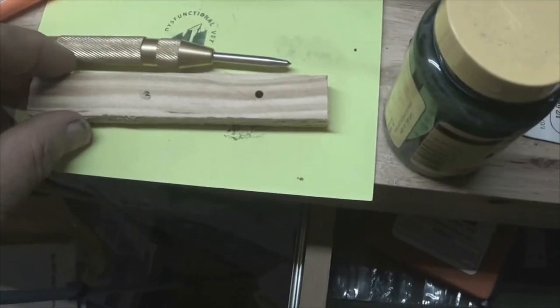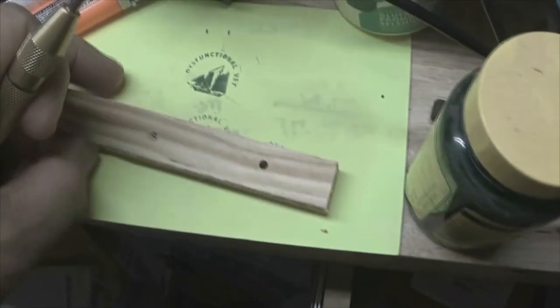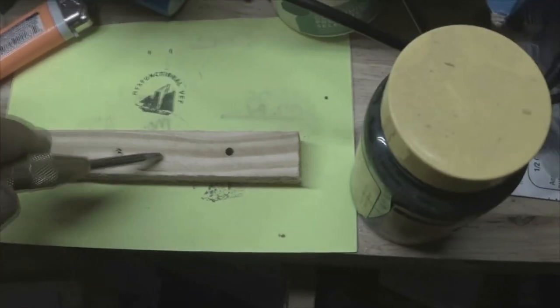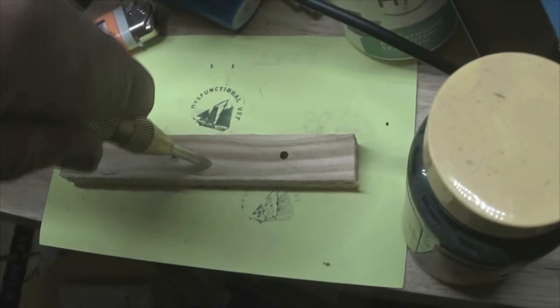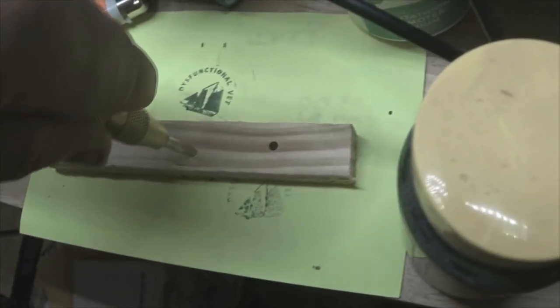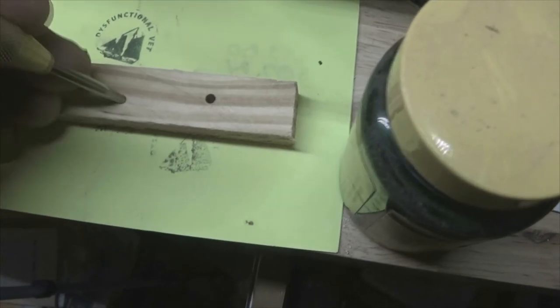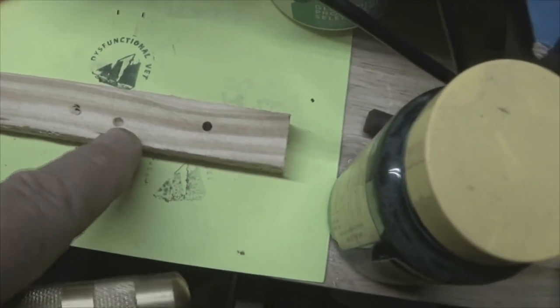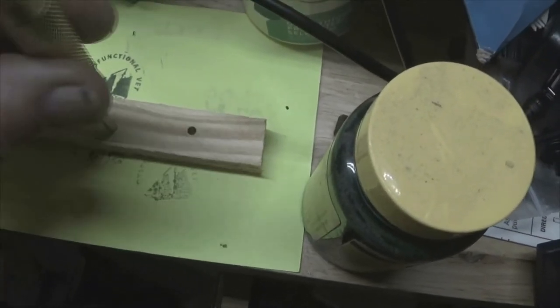This is the punch that I used. The way this thing works you take this and what you do is you press down and then it snaps and it'll put a divot in your metal plate where you can then put your drill in and start drilling.